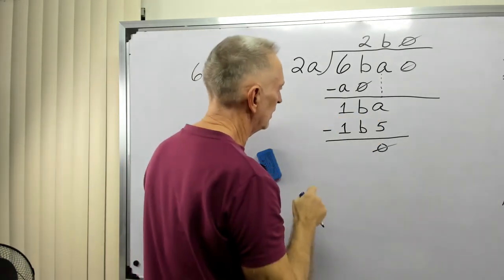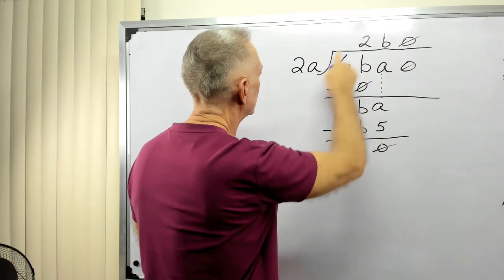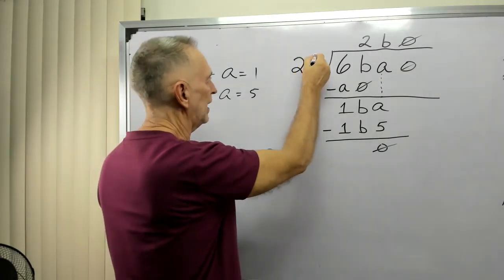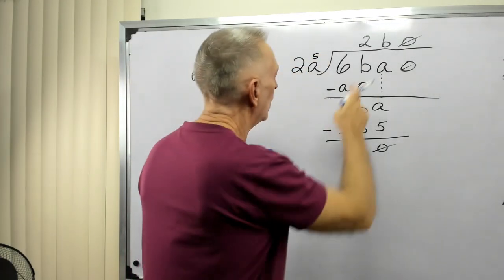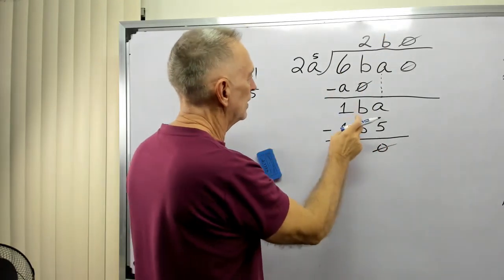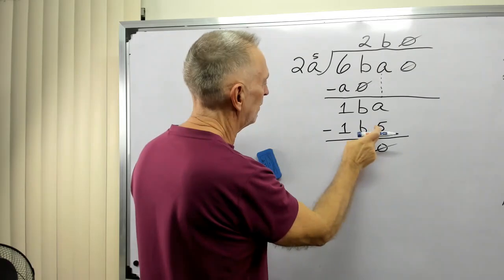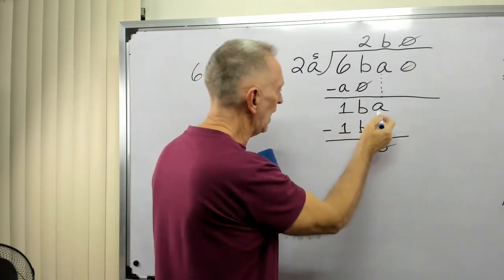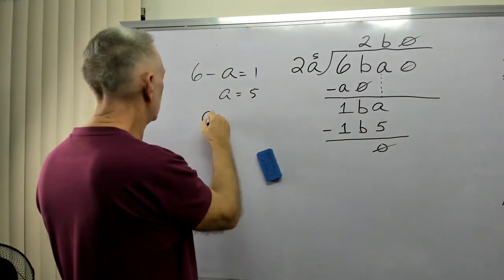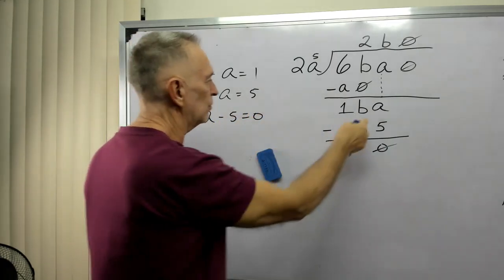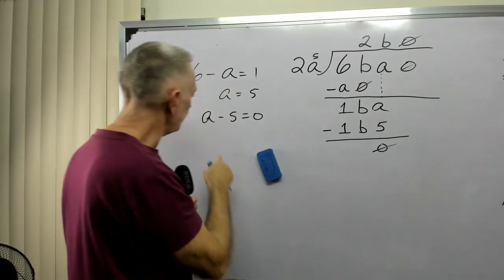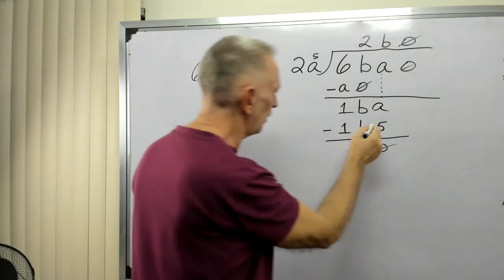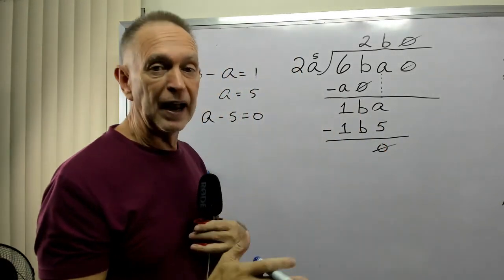Now, 1BA, I have B times 2A. We think A is 5, so this looks like we think it's a 25. B times 2A gives me 1B5. What would we do now? We would subtract. A minus 5 equals 0. Now, we're just subtracting a digit at a time. Well, 5 minus 5 equals 0, so we've confirmed that A is, in fact, 5.